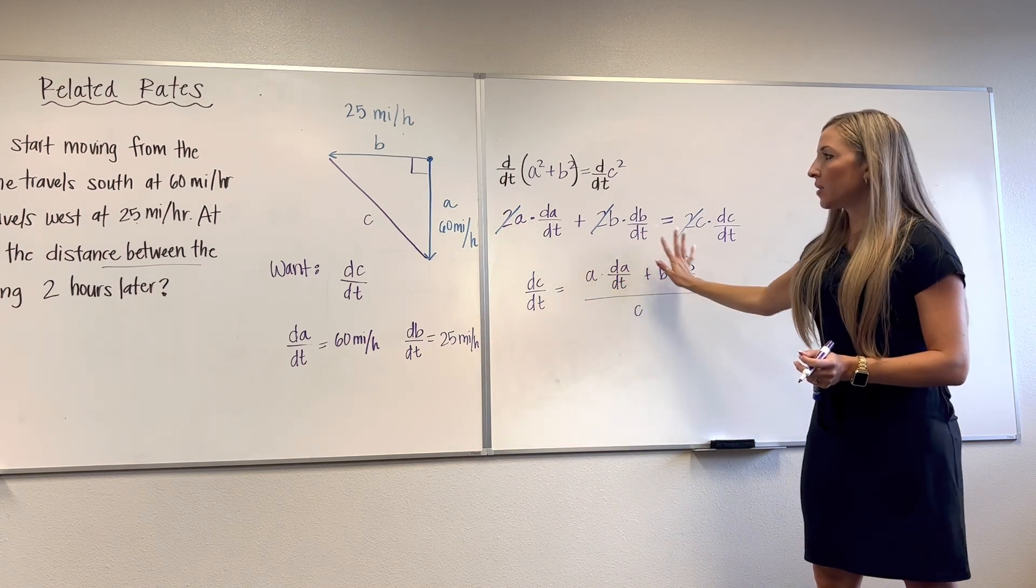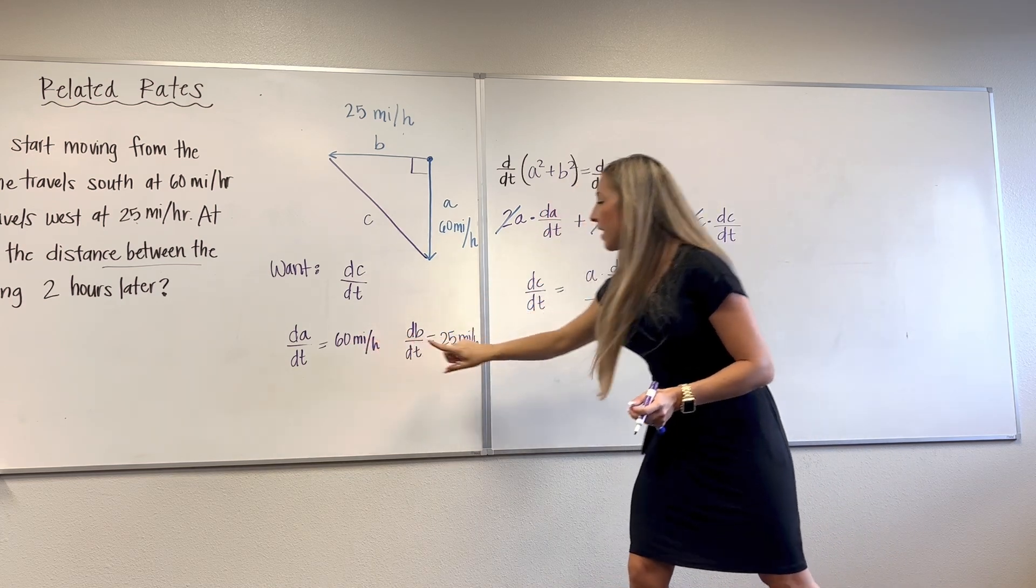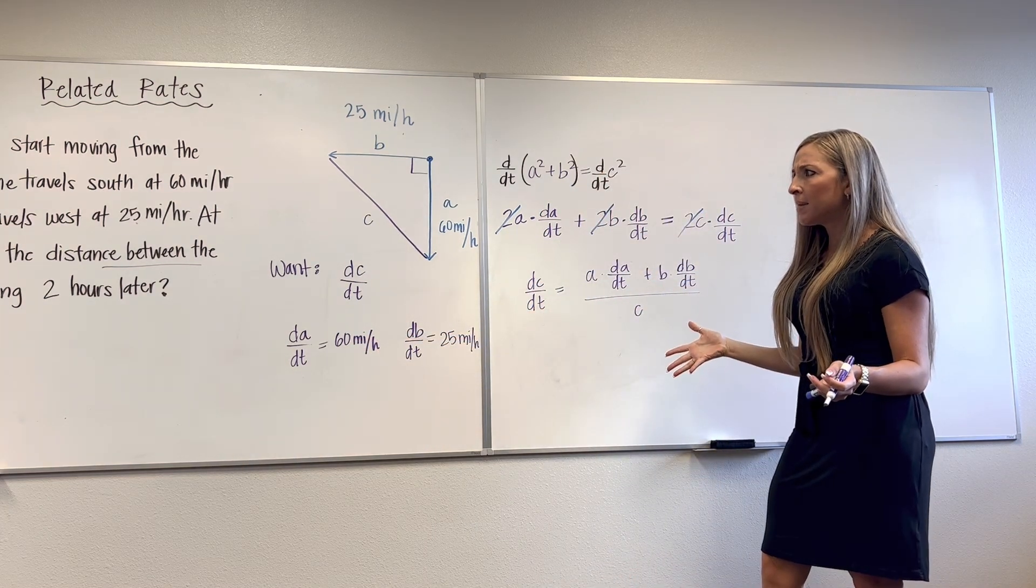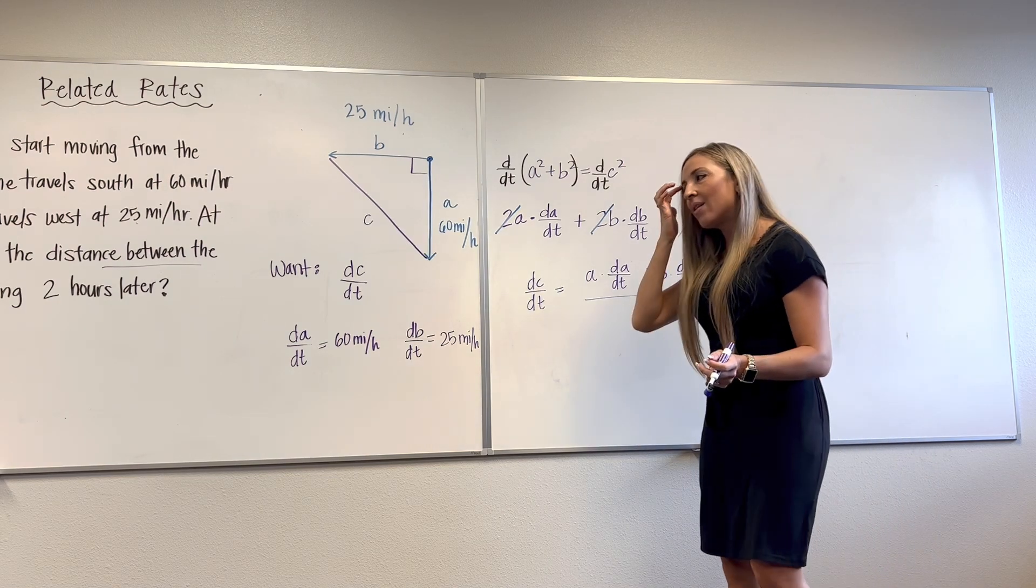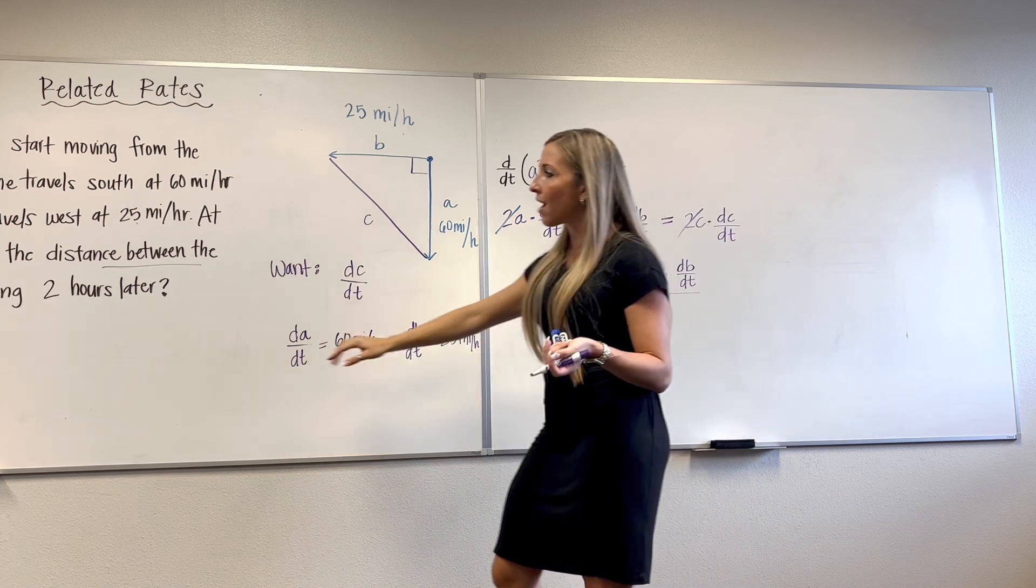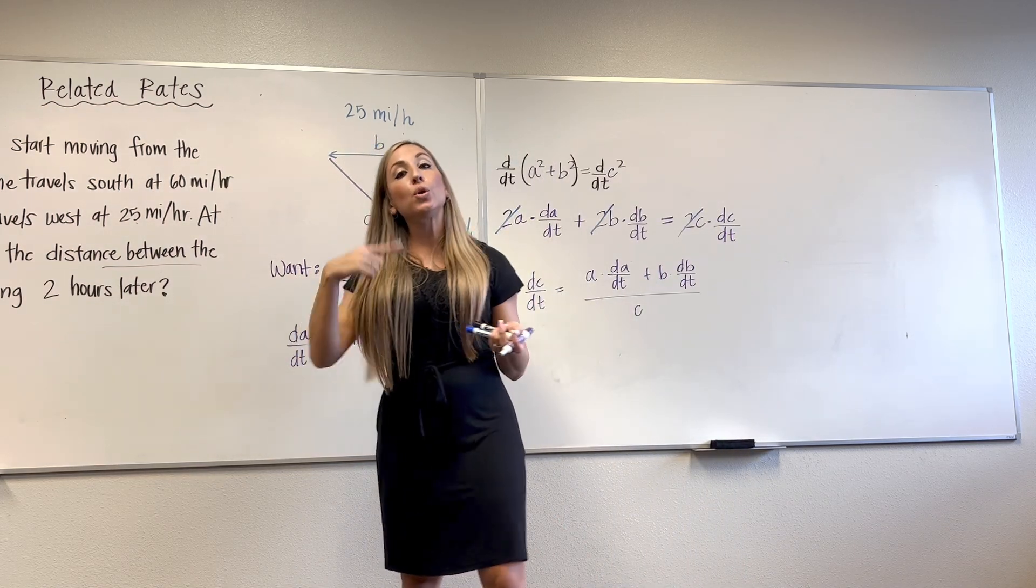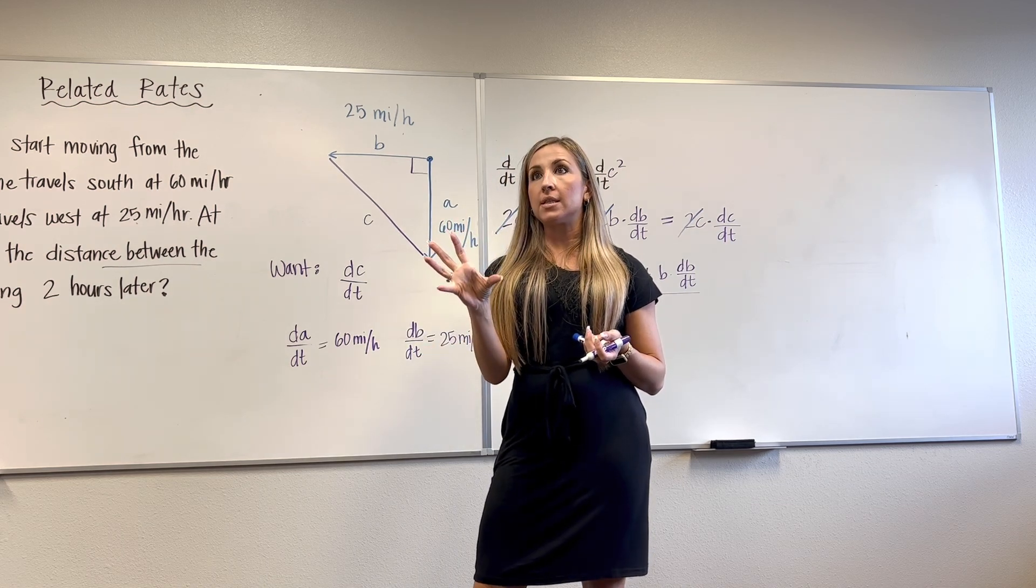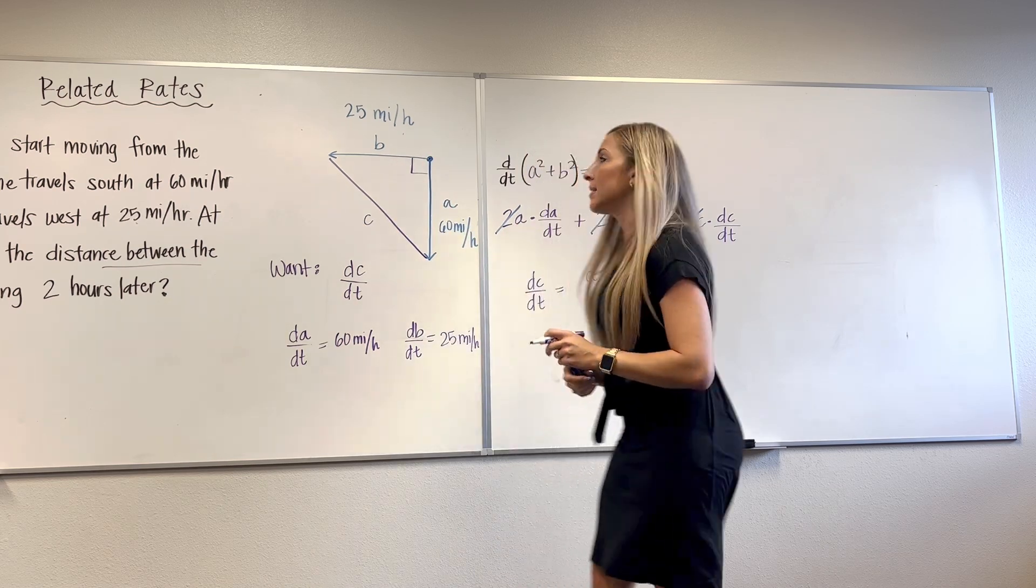So now it's time to just substitute in everything appropriately. They gave me dA/dt. It's right there. They gave me dB/dt right there. They didn't give me A, B, and C, though. What is going on? So remember, I have another piece of information I haven't used yet. And they want to know at what rate the distance is changing two hours later. So let's draw a triangle specific to the situation two hours later, and we'll be able to figure out those distances, A, B, and C.